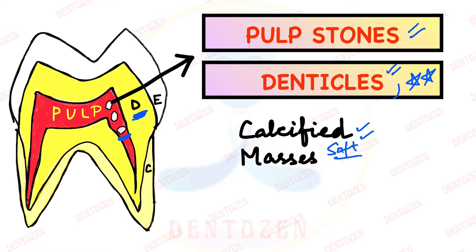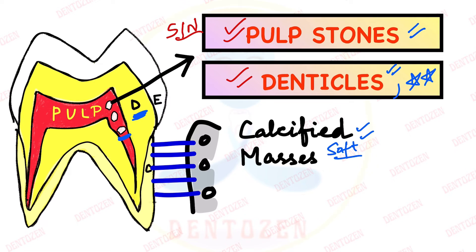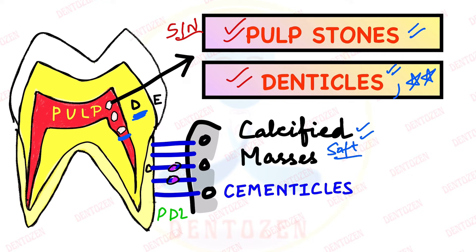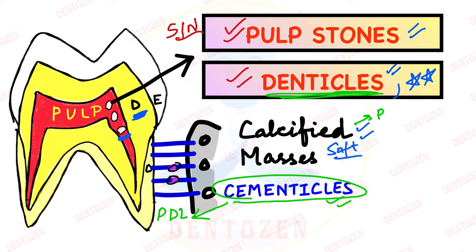That can be an important short note for your theory exam, which can come either as pulp stones or denticles. There is another term — another calcified mass which can be seen in the soft tissue around the tooth, that is the periodontal ligament. These calcified masses in the periodontal ligament are called cementicles. So don't get confused: cementicles are calcified masses in the periodontal ligament, and denticles are calcified masses in the pulp.